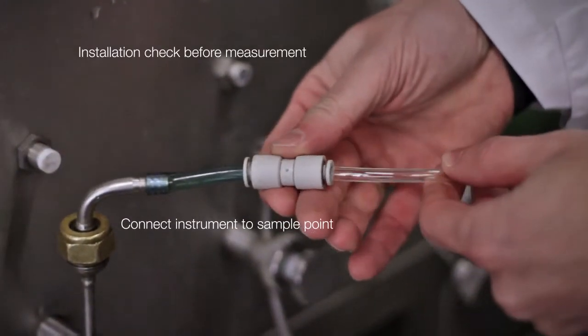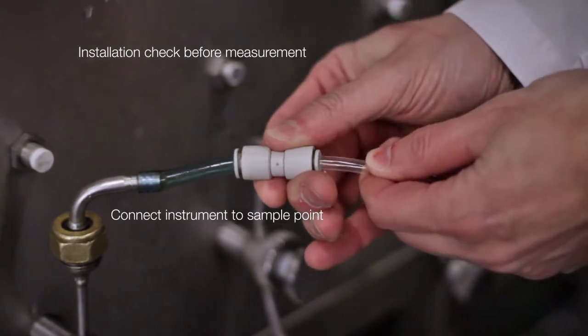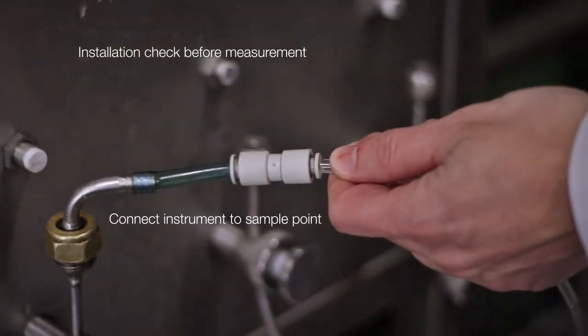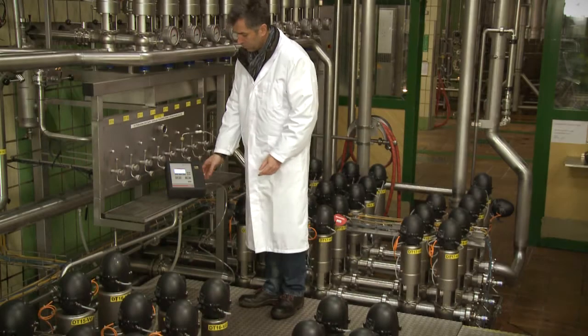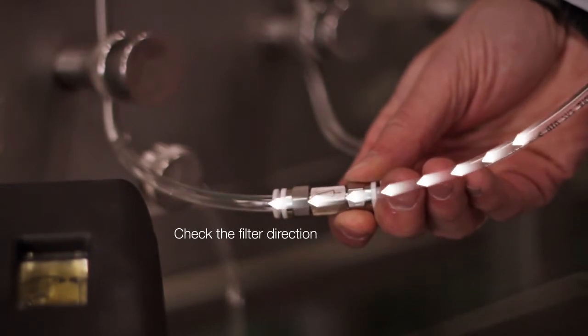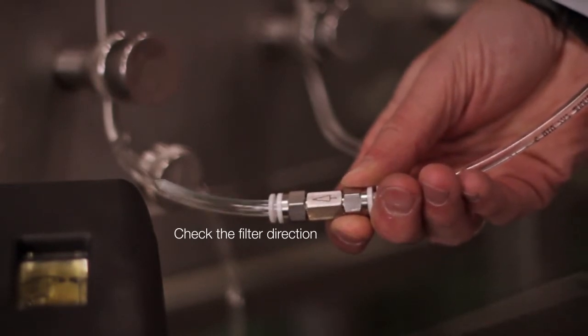First, connect the instrument to the sample point and make sure that all hoses are tightly fixed. The ball valve in the back is fixed in the position you see here. The ATLINE filter between the sample point and the instrument's sample inlet must be implemented correctly.